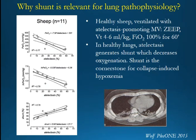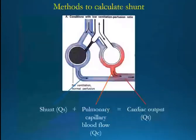So shunt is at the basis of collapse-induced hypoxemia. There are other causes of hypoxemia, but when this is purely collapse — no ventilation with perfusion that is left there — you have hypoxemia due to shunt. This is why it's relevant.